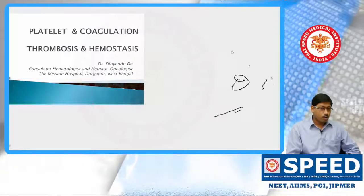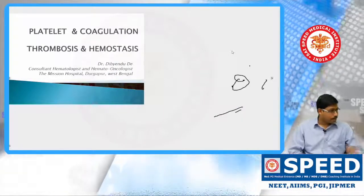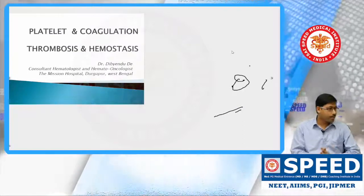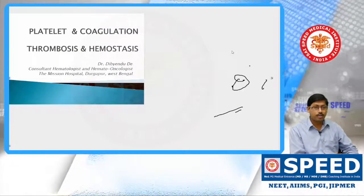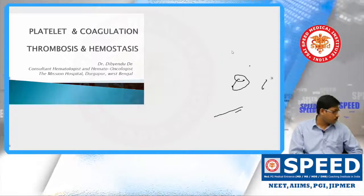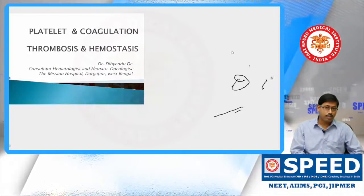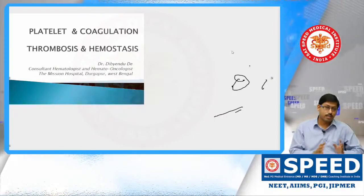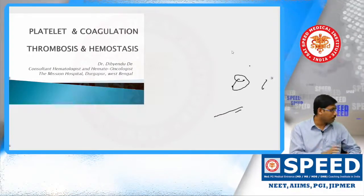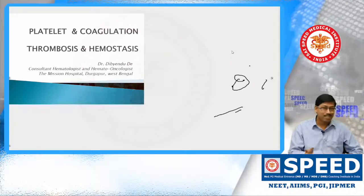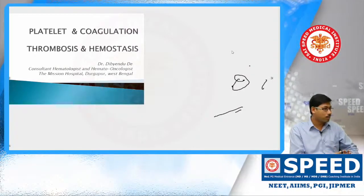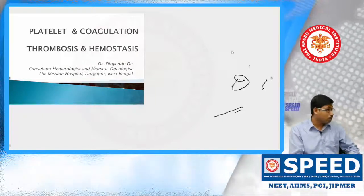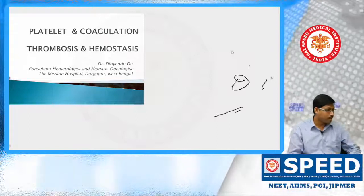We have already completed the anemia and malignancy topics, so we are starting with the benign part — the last part of the hematology class — which is platelets and coagulations. This is somewhat difficult if you don't know the basics, but if you completely know the basics then it is very easy because it's calculations only. Pathology students are actually very good at this because they perform the tests themselves.